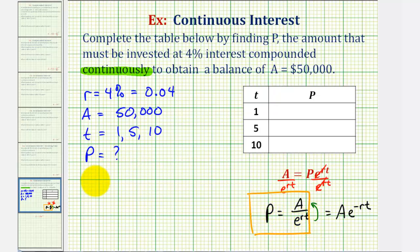So using our formula, we'll have P is equal to A, which is $50,000 divided by E raised to the power of R times T, where R is 0.04, and we'll leave T in the equation, because it will be either one, five, or ten. And now we'll go to the calculator to find P based upon the value of T.